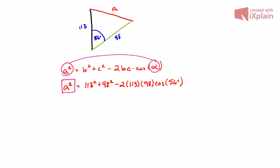I'm going to continue to solve and show some of my steps here. Now I have a squared is equal to—evaluating 113 squared is 12,769, evaluating 98 squared is 9,604—minus 2 times 113 times 98, that's 22,148 times the cosine of 56 degrees.